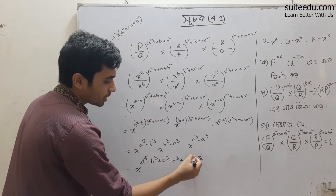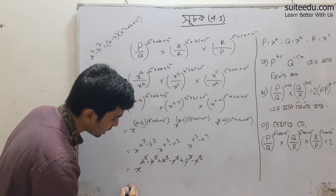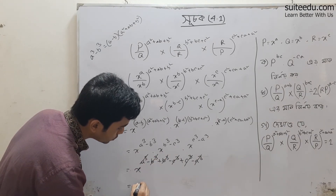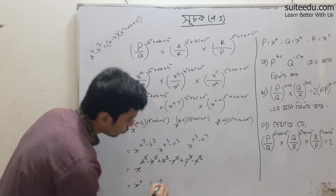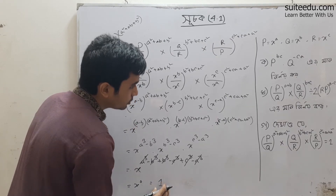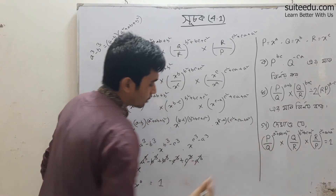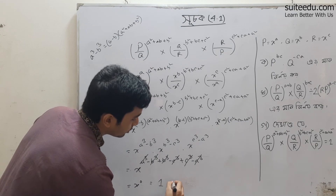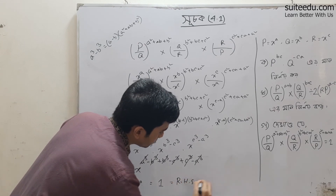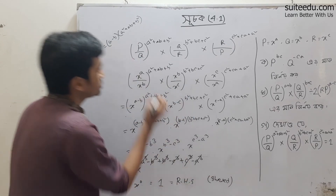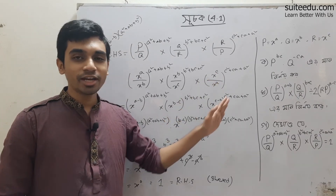Adding the exponents: A cubed minus A cubed cancels, B cubed minus B cubed cancels, C cubed minus C cubed cancels. So the left-hand side simplifies to x to the power zero, which equals 1.